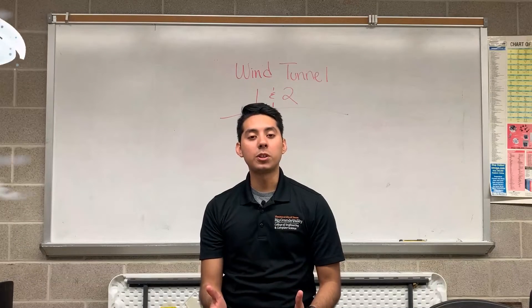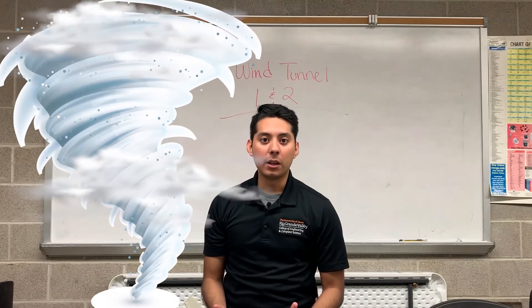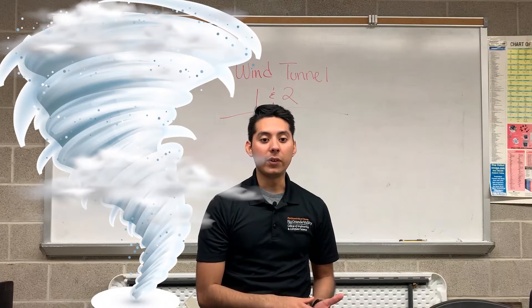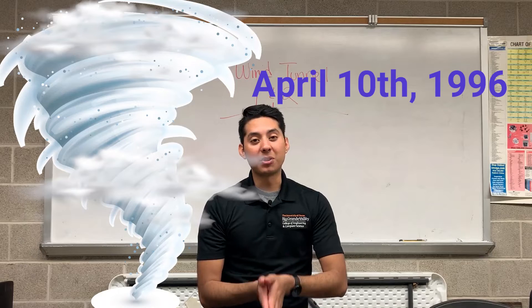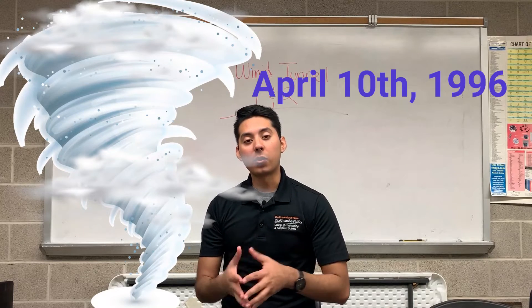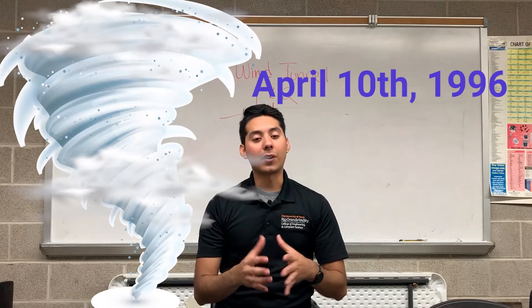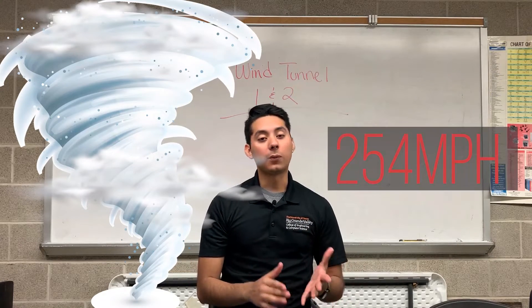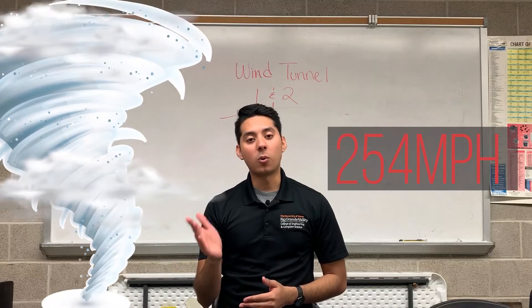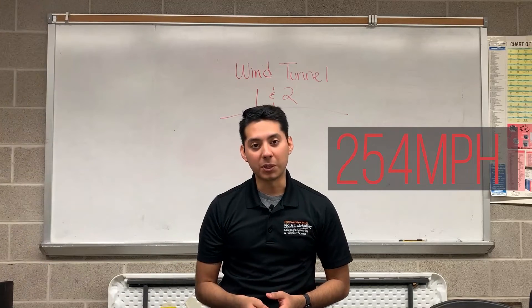Do you know the fastest wind speed recorded comes from Hurricane Olivia on April 10, 1996, which recorded winds of around 254 miles per hour, which is about one-third of the speed of sound.